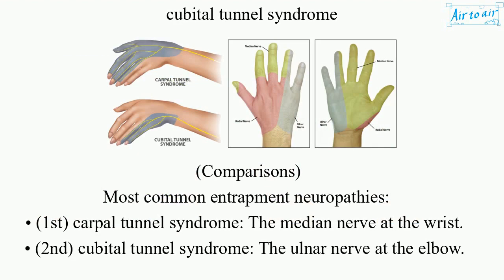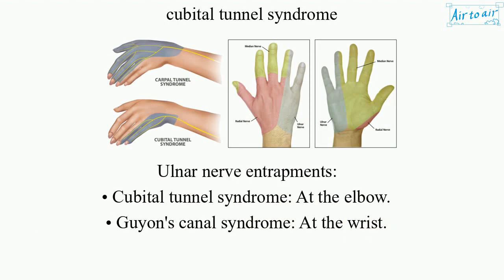Comparisons — most common entrapment neuropathies: 1. Carpal Tunnel Syndrome — the median nerve at the wrist. 2. Cubital Tunnel Syndrome — the ulnar nerve at the elbow. Ulnar nerve entrapments include Cubital Tunnel Syndrome at the elbow and Guyon's Canal Syndrome at the wrist.